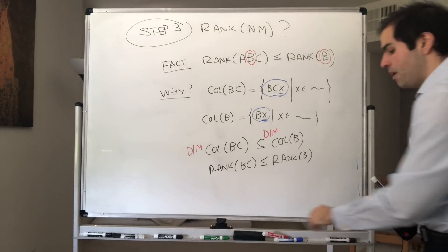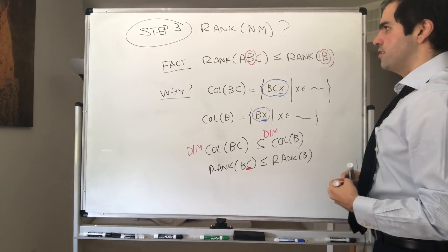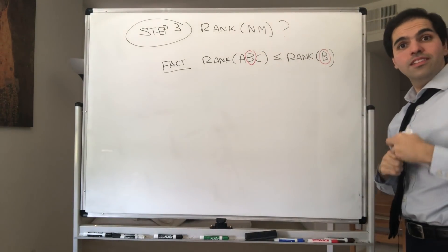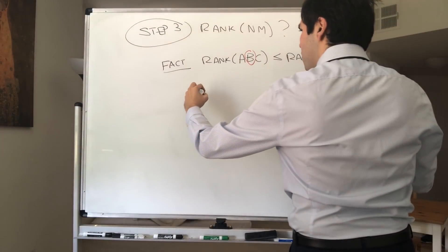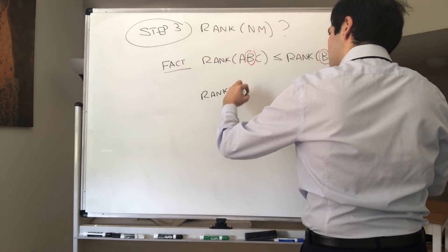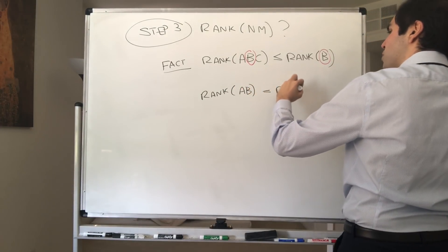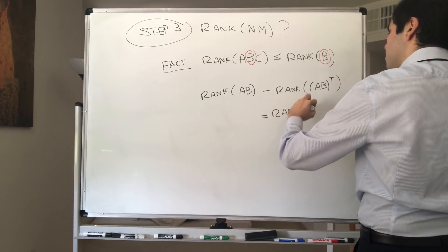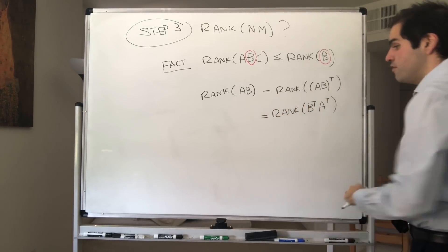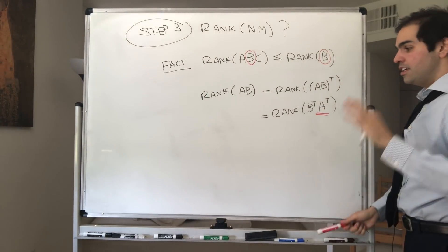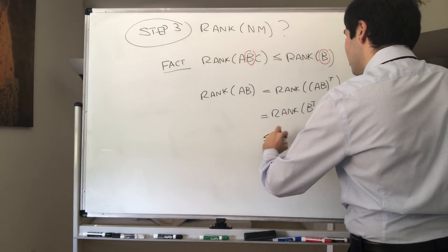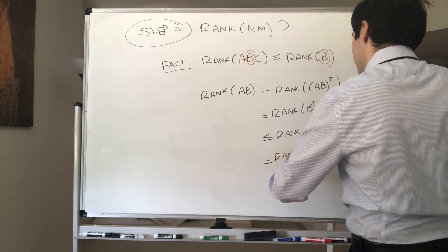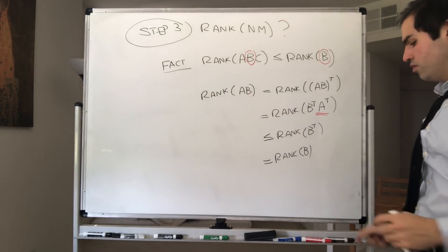So the point is, if you're already multiplying by a matrix to the right, that already decreases the rank. So this part is done, we just need to do it when you multiply the matrix to the left. Alright, and for this, notice this really neat trick, because the point is, what is the rank of AB? Well, the rank of a matrix is the rank of its transpose. So it's the rank of AB transpose. But that's the rank of B transpose A transpose. And remember what we've shown, we've shown that if you multiply a matrix to the right, it just decreases the rank. So this is less than or equal to the rank of B transpose. But that's just the rank of B. And therefore, multiplying by a matrix to the left also decreases the rank.